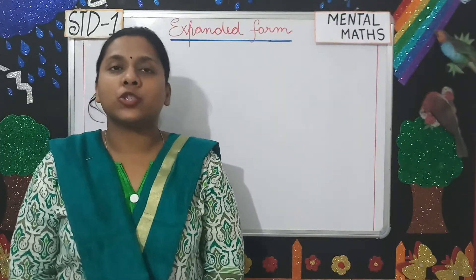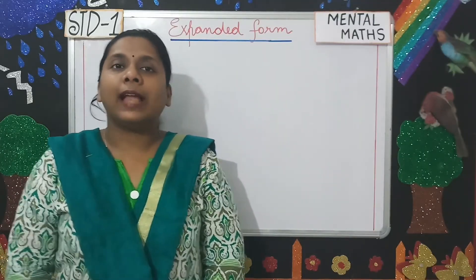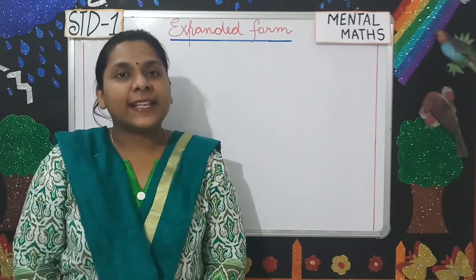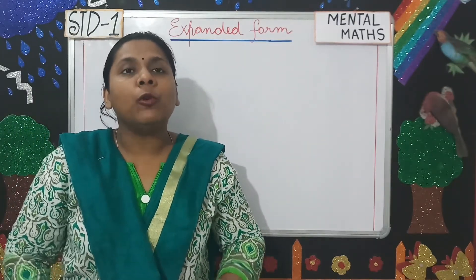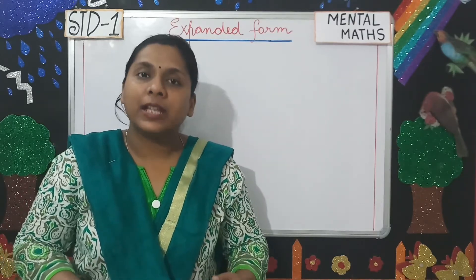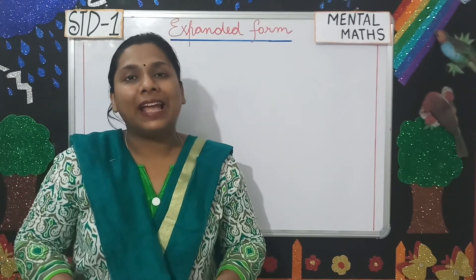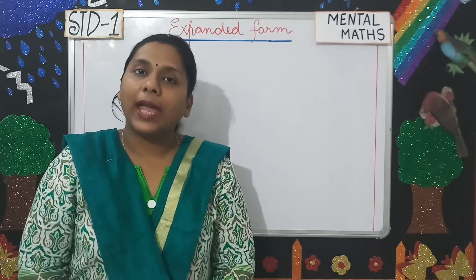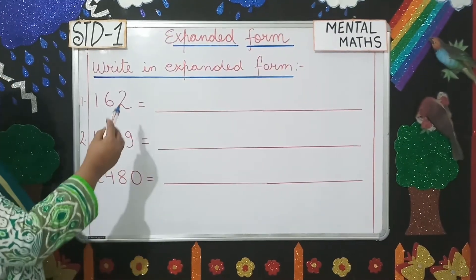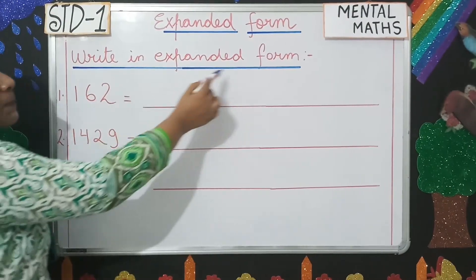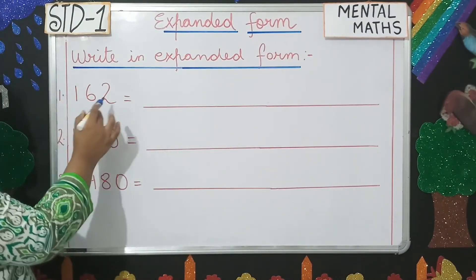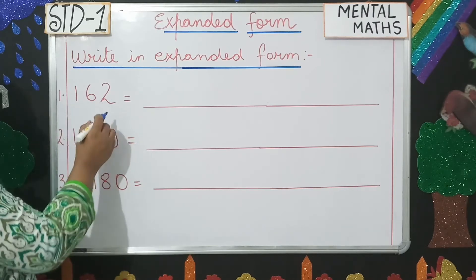Let us move to the next topic, that is expanded form. Now students, in expanded form you have to expand the number. That means you have to separate the digits and add their place values to it. Let us see some questions — write in expanded form. You have to expand this number: 162.